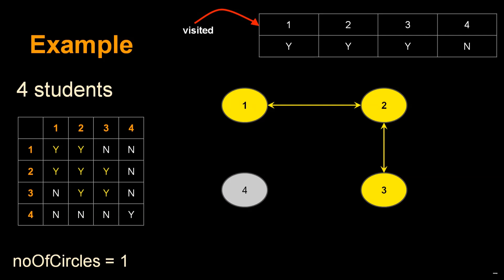Now let's find unvisited friends of student 3. Student 3 is only friends with student 2, who is already visited. So we backtrack to finding more unvisited friends of student 2.